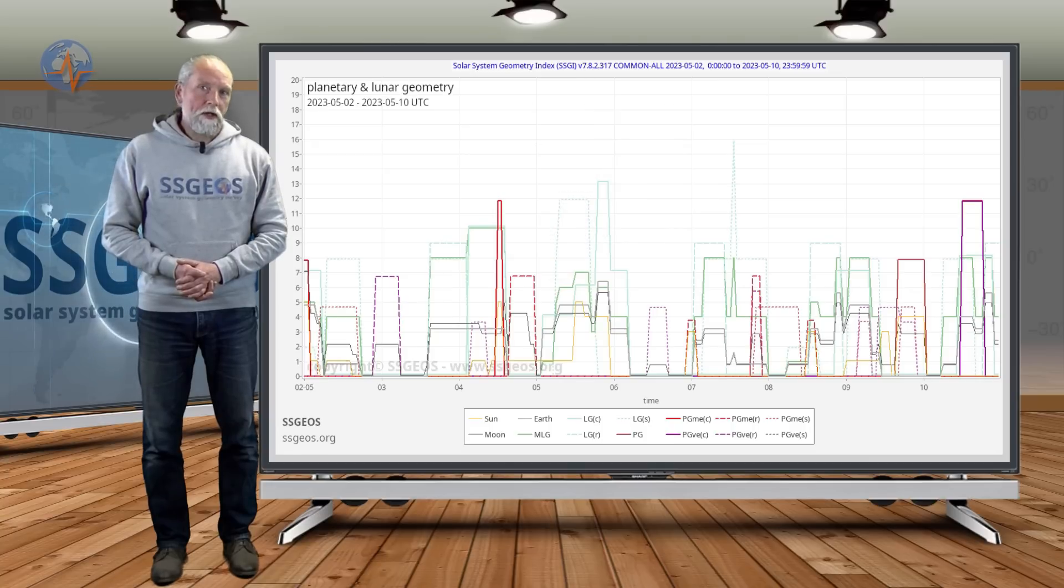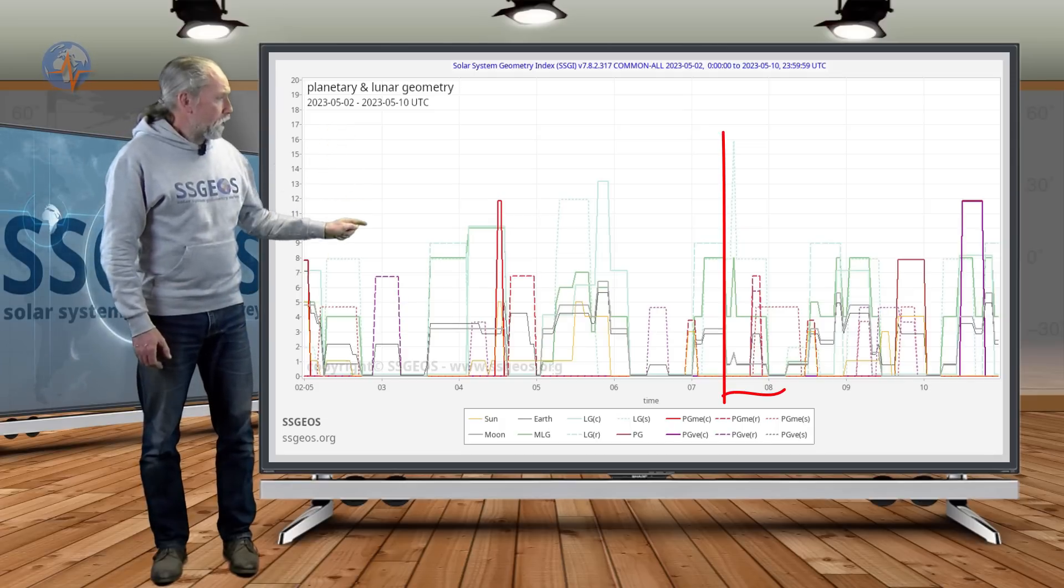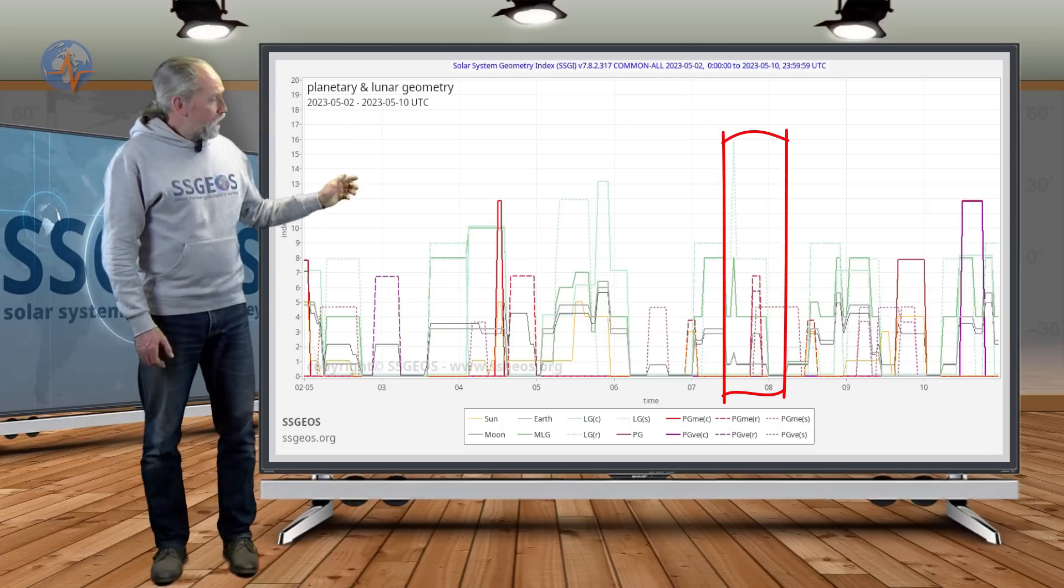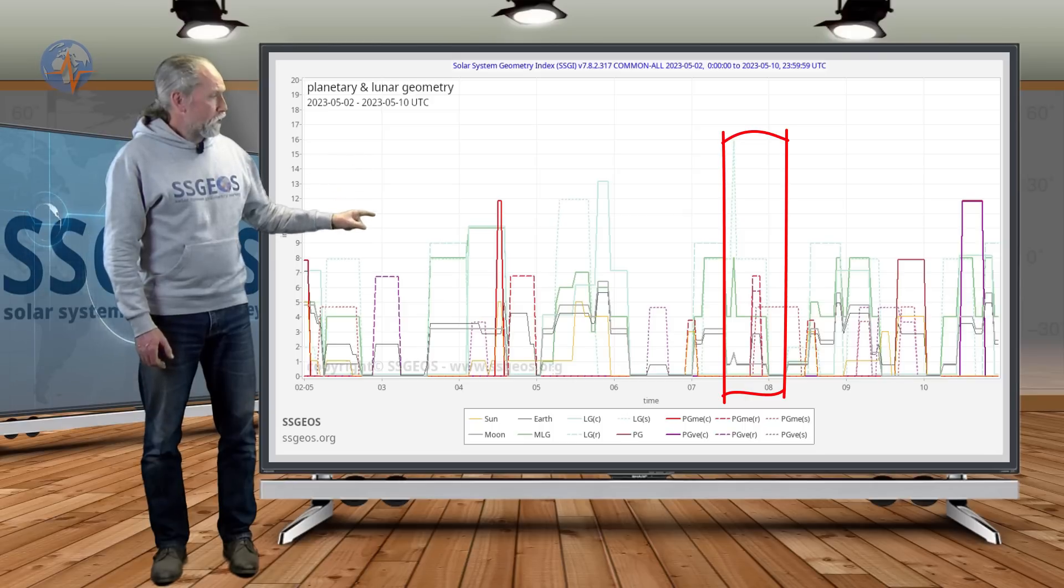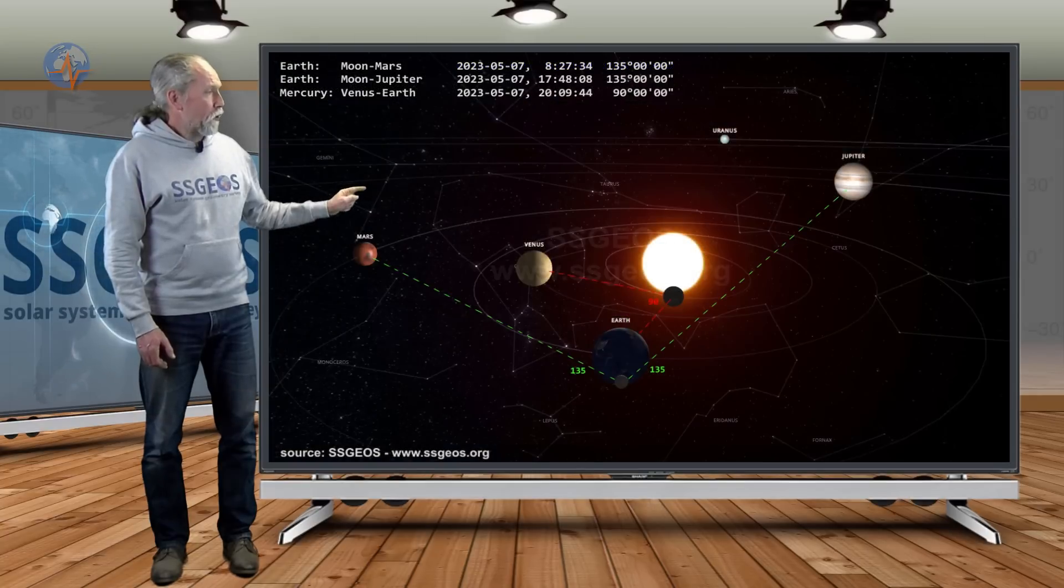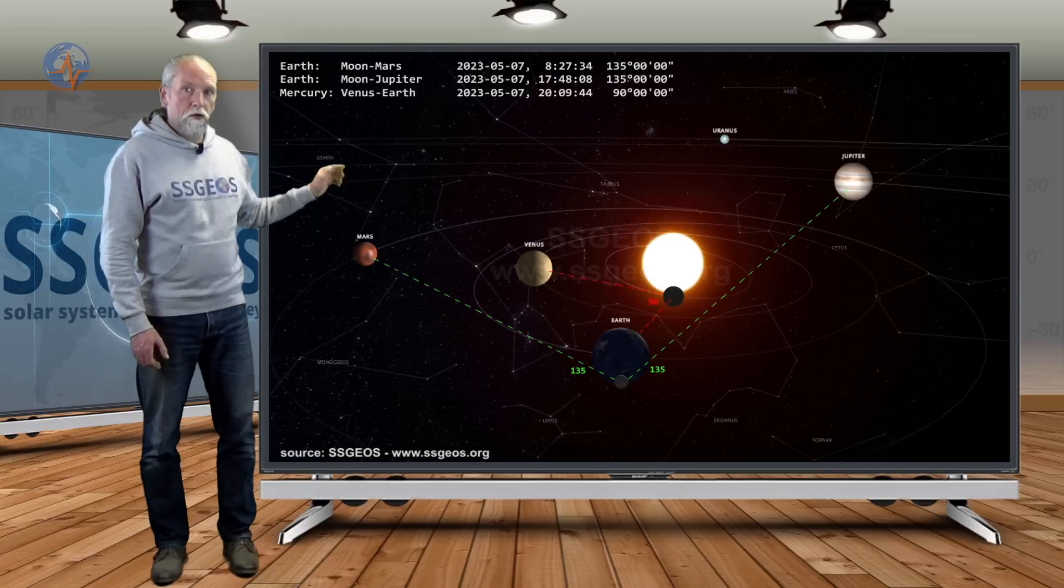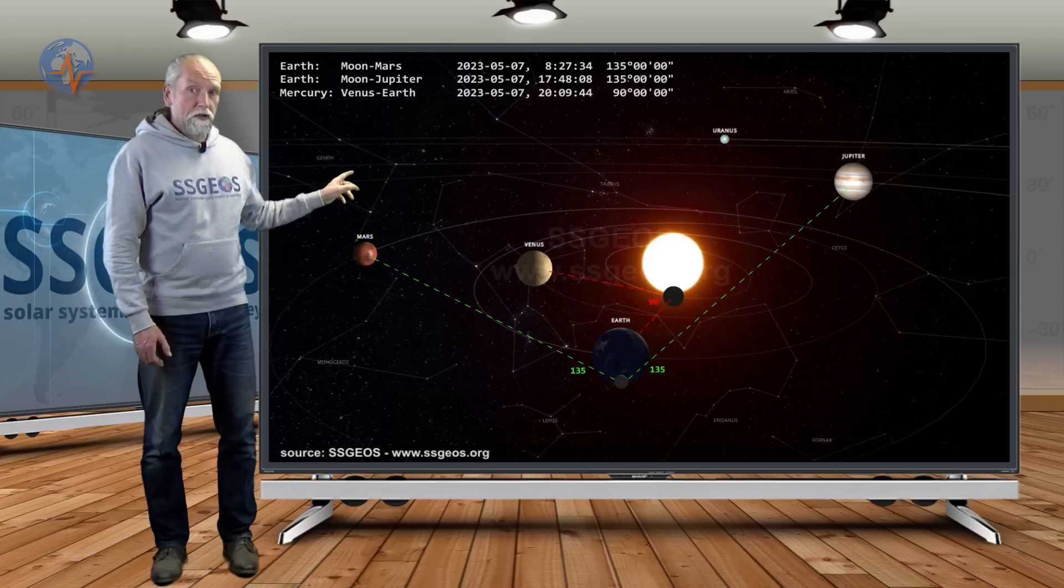So what are we going to have in the next couple of days? If we look at the SEGI graph, we see a higher lunar peak that is today, followed by some critical planetary geometry with Mercury and Venus. We see that by the red and purple colors. And if we look at the solar system, we see the 90 degree angle with Mercury involving Earth and Venus and that can be critical planetary geometry.